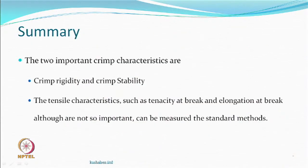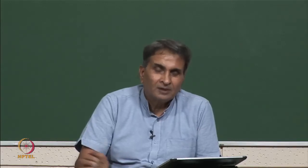Important crimp characteristics therefore are crimp rigidity and crimp stability. We also mentioned tensile characteristics such as tenacity at break and elongation at break, although these are not so important because generally during use your yarn is not going to be extended to that level. If it extends 300 to 400 percent, your stretch at any given point in a garment may only be 30 to 50 percent, so it is much below. But you still measure and report these values.